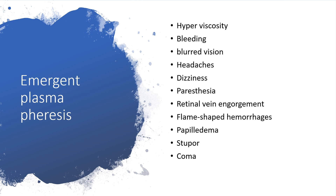If we are running into a very serious problem, then we have to use emergent plasmapheresis. Plasmapheresis as a case of emergency will be required when we are dealing with hyperviscosity — bleeding, blurred vision, headache, dizziness — or dealing with paresthesia, retinal vein engorgement, flame-shaped hemorrhages, papilledema, stupor, or if the WM patient is even in a coma.